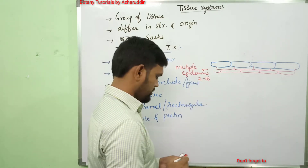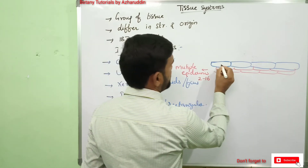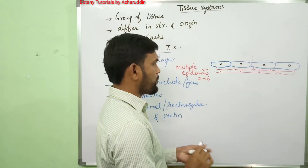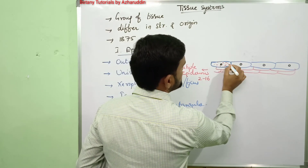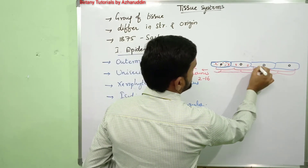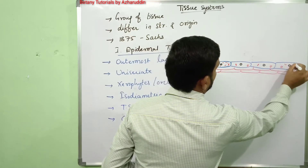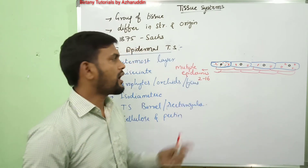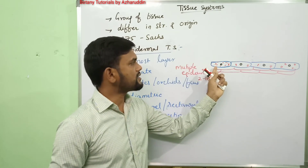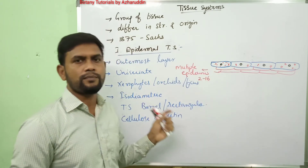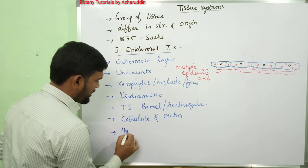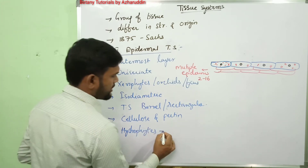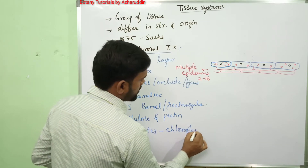Each cell of the epidermis consists of a nucleus and a vacuolated protoplast. Epidermal cells contain leukoplasts, which is why they are colorless. However, in some plants like hydrophytes, the epidermal cells contain chloroplasts.